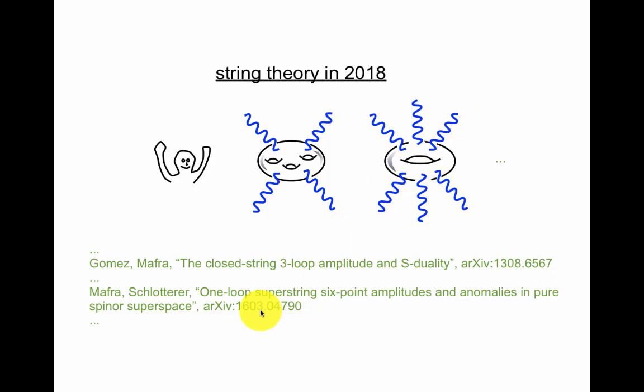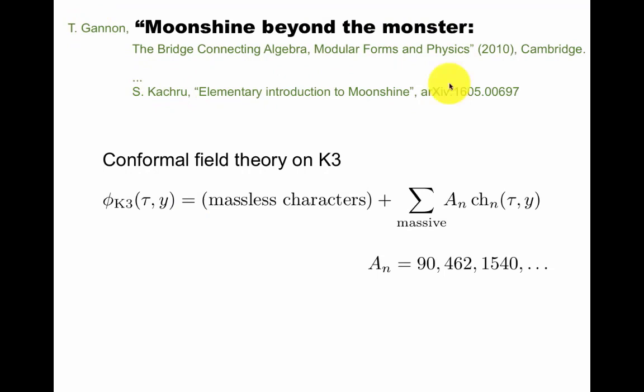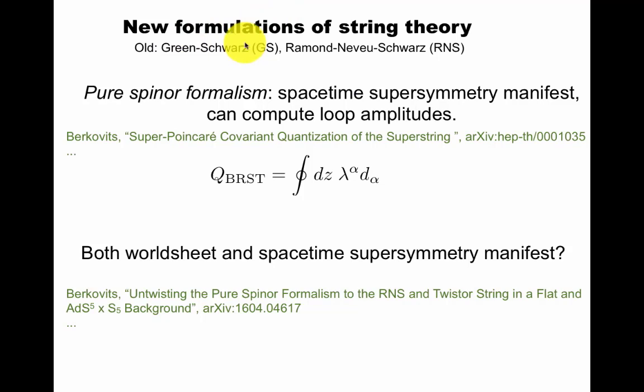What is happening now? The three-loop amplitude in string theory was first computed a few years ago. The six-point amplitude was very well understood in this paper. But I would say there's still a lot of interesting questions about scattering amplitudes in recent work. One example is moonshine beyond the monster by Terry Gannon, a mathematician. And this is nicely reviewed by Shamit Kachru, a physicist, that the conformal field theory on the K3 surface, you can compute this quantity. The numbers you get here as coefficients, 90, 462, and so on, have significance as the dimensions or representations of a sporadic group, which is interesting to mathematicians.